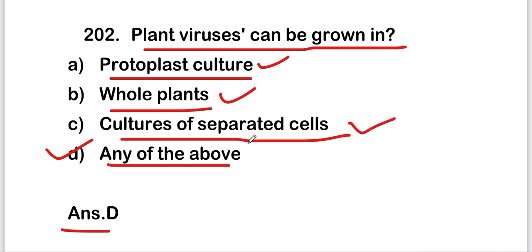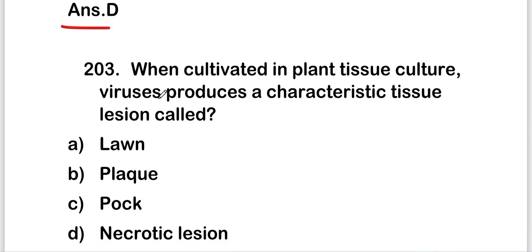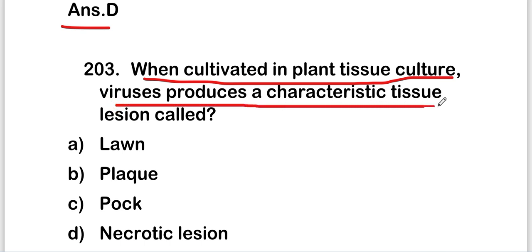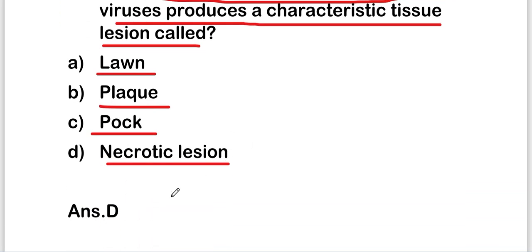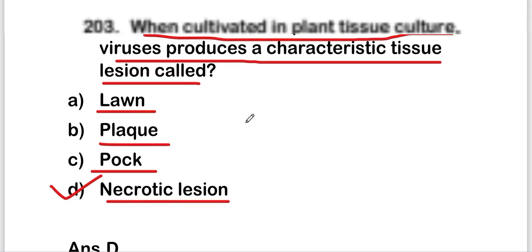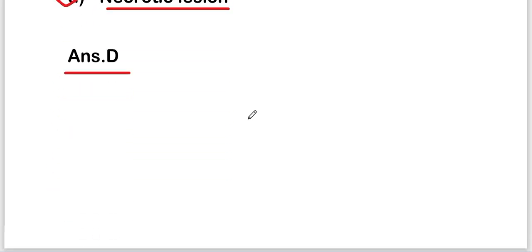The next question is: when cultivated in plant tissue cultures, viruses produce a characteristic tissue lesion called — options are lawn, pluck, fork, or necrotic lesion. The right answer is option D, that is necrotic lesion. When cultivated in plant tissue culture, viruses produce a characteristic tissue lesion called necrotic lesion.